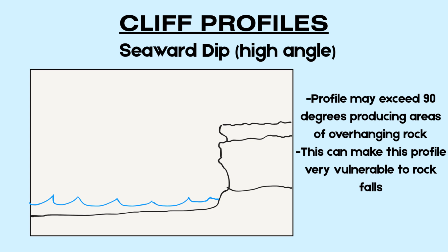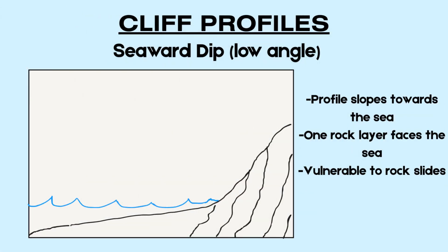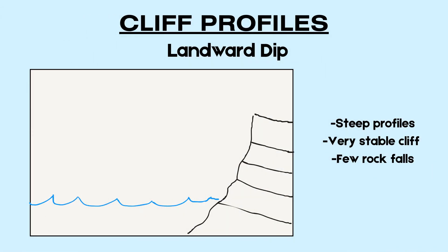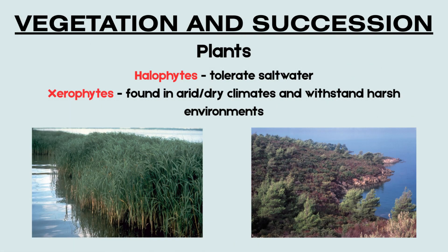Seaward dips may exceed 90 degrees, resulting in areas of overhanging rock forming. Consequently, this can make the profile very vulnerable to rock falls. A low-angle seaward dip has a profile that slopes towards the sea, with one rock layer facing the sea — it is very vulnerable to rock slides. Landward dips feature steep profiles and very few rock falls, creating a very stable cliff.